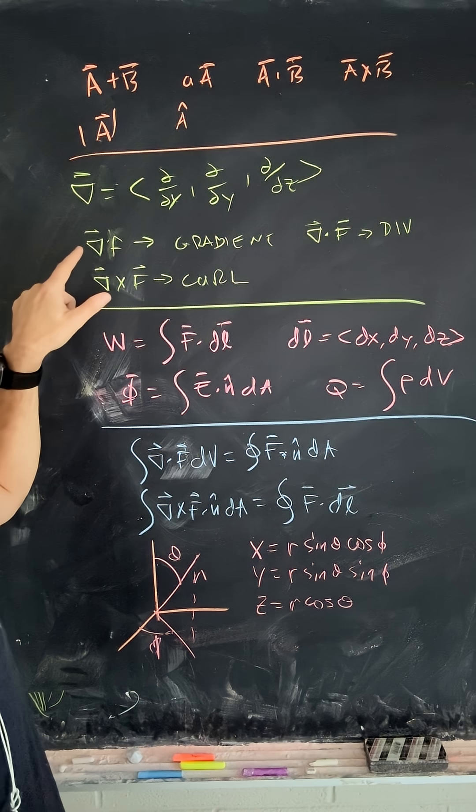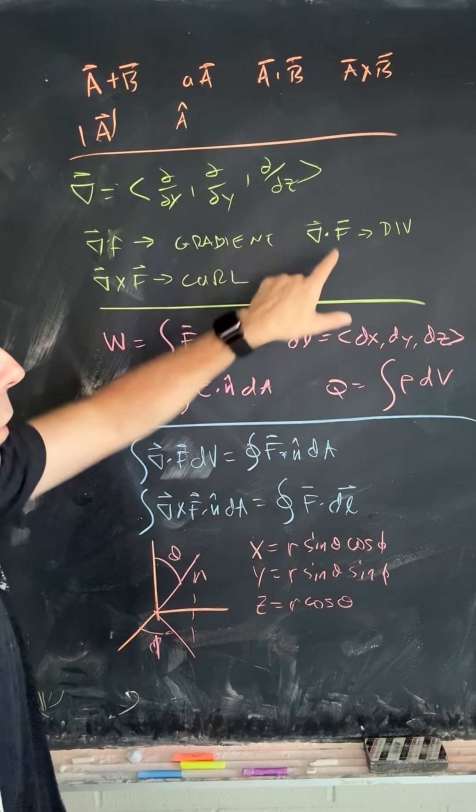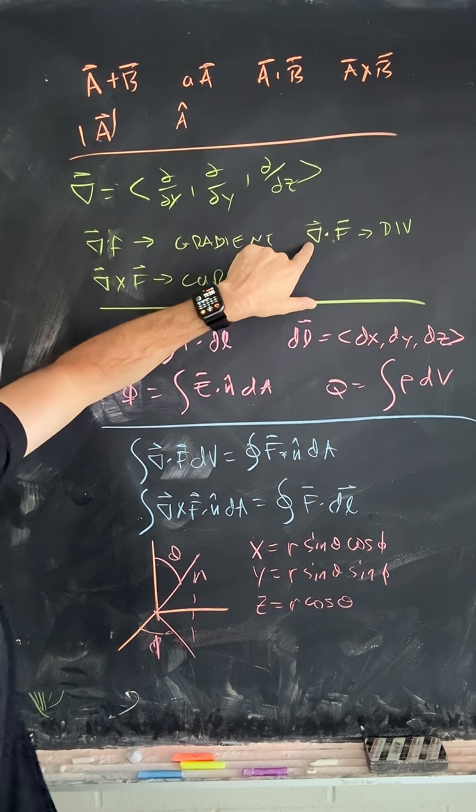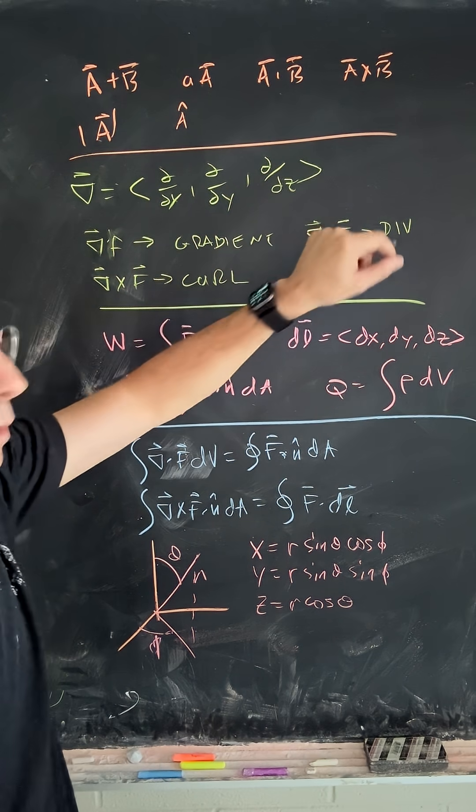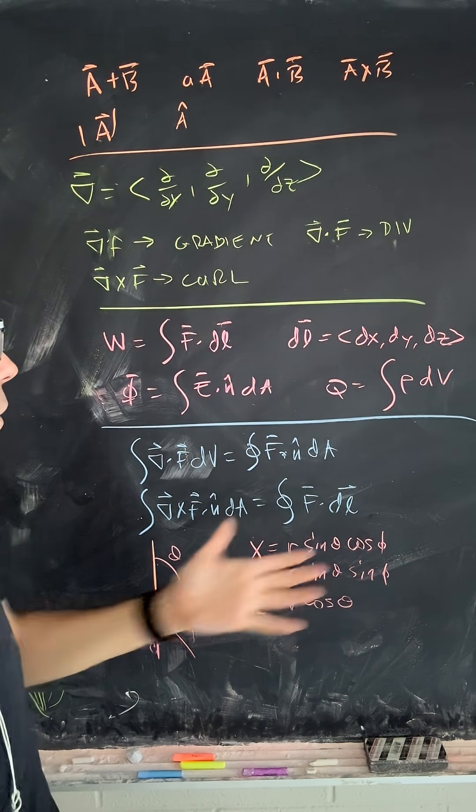And then we have the gradient is the del operator on a scalar function, and it gives you a vector. We have the divergence, the del operator on a vector function, and it gives you a scalar. And then the curl, the del operator cross the vector function.